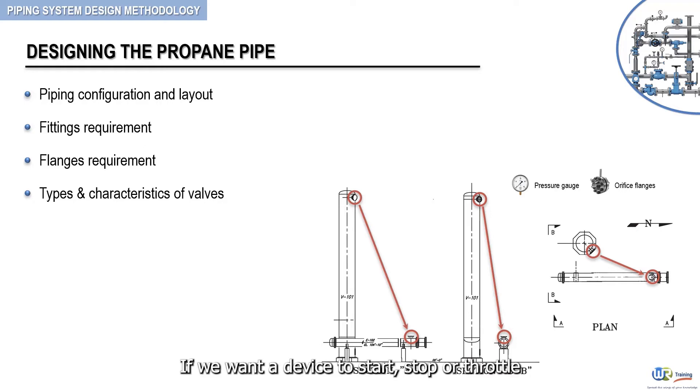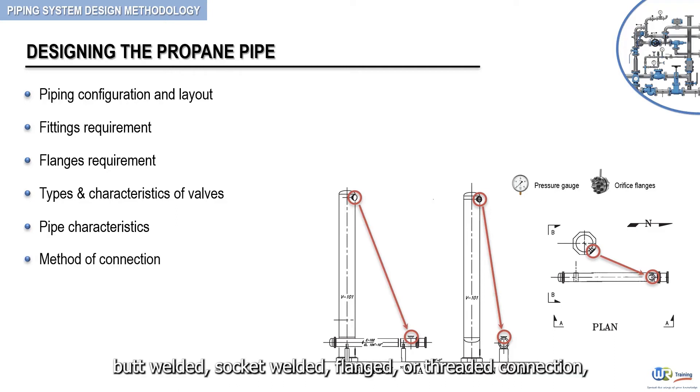The pipe characteristics in terms of nominal size, outside diameter, wall thickness, and pound rating. The method of connection, that is butt welded, socket welded, flanged, or threaded connection.